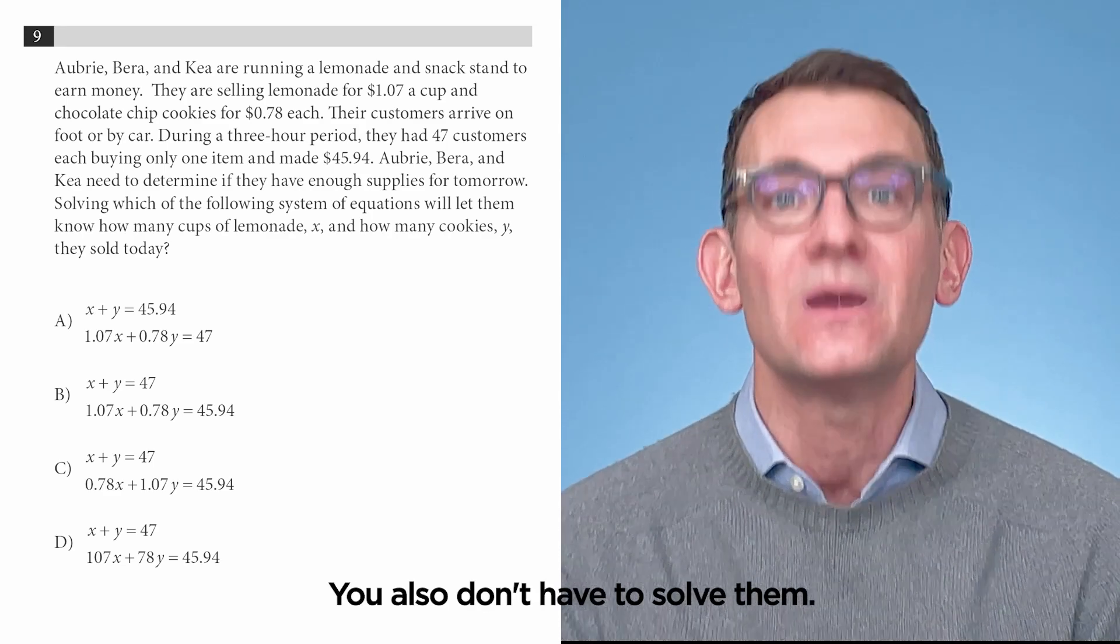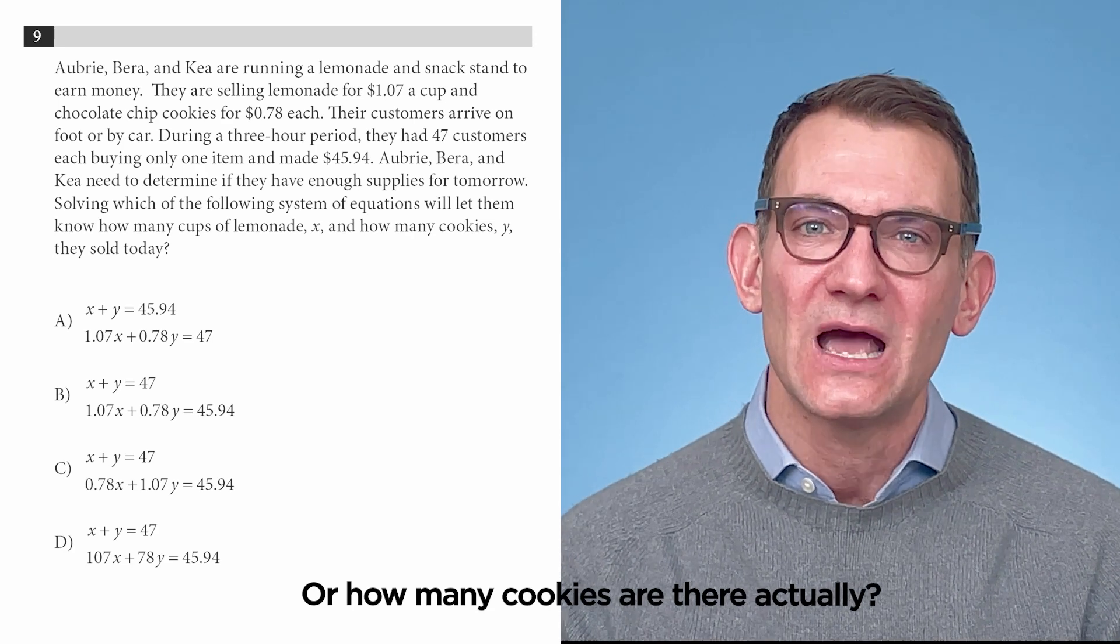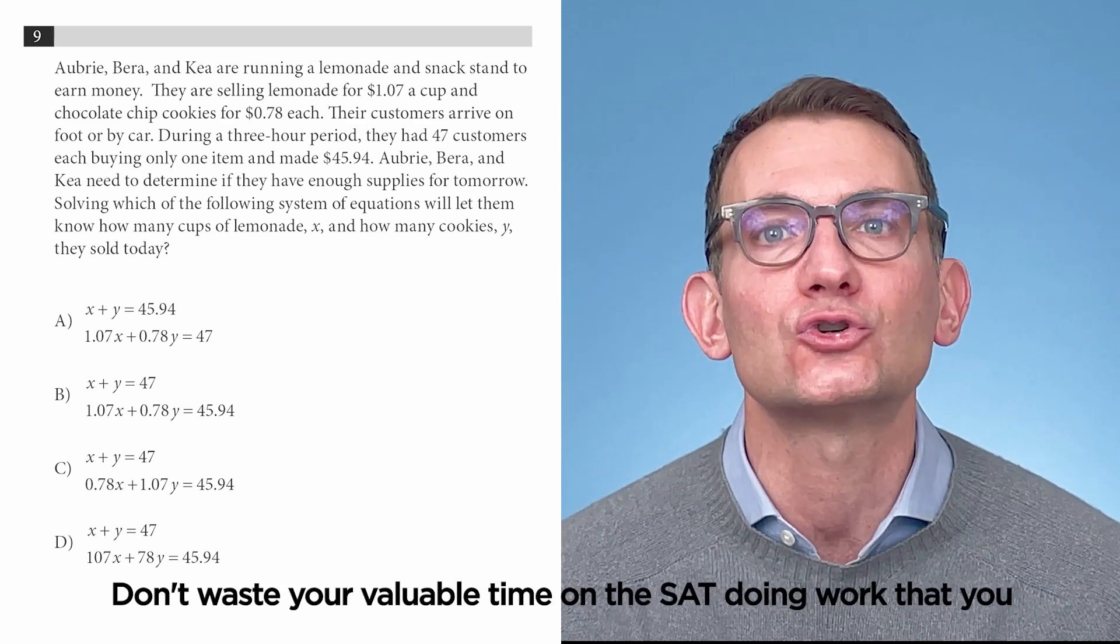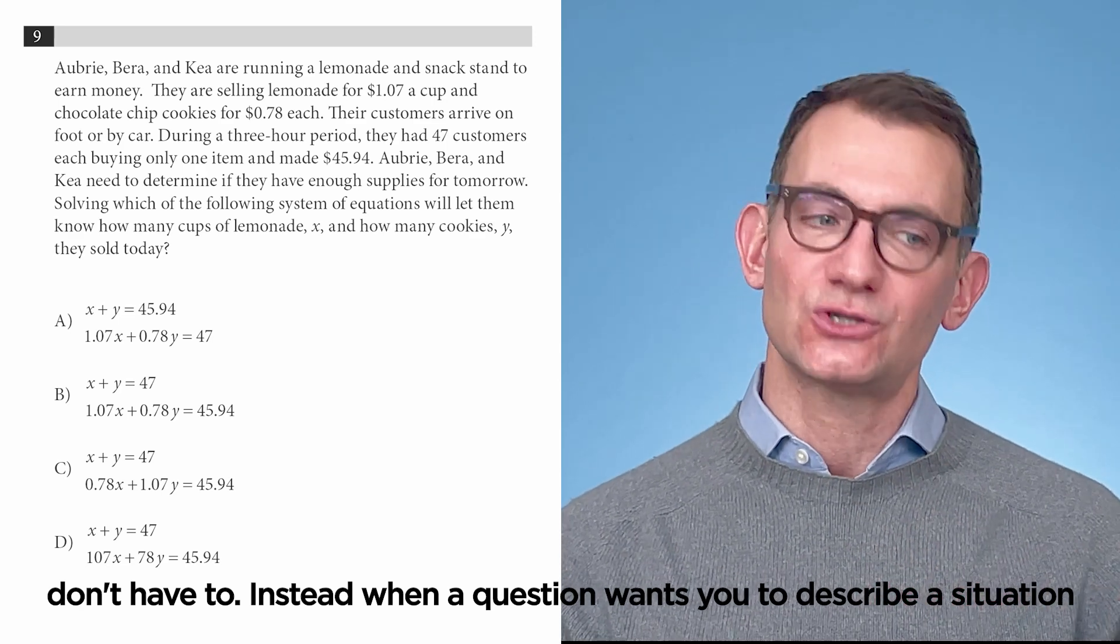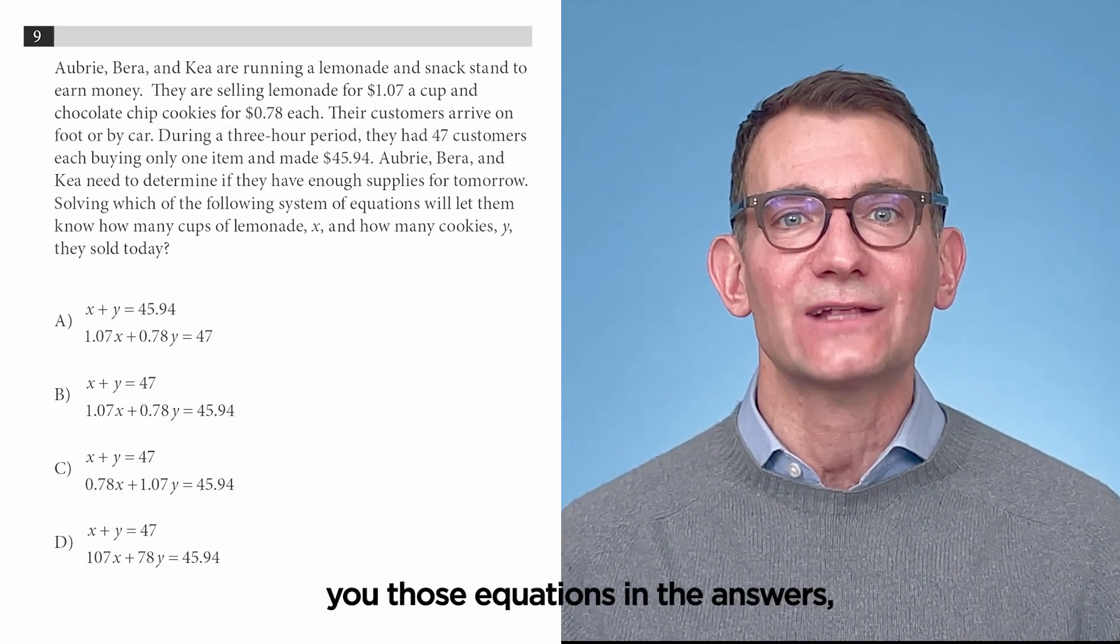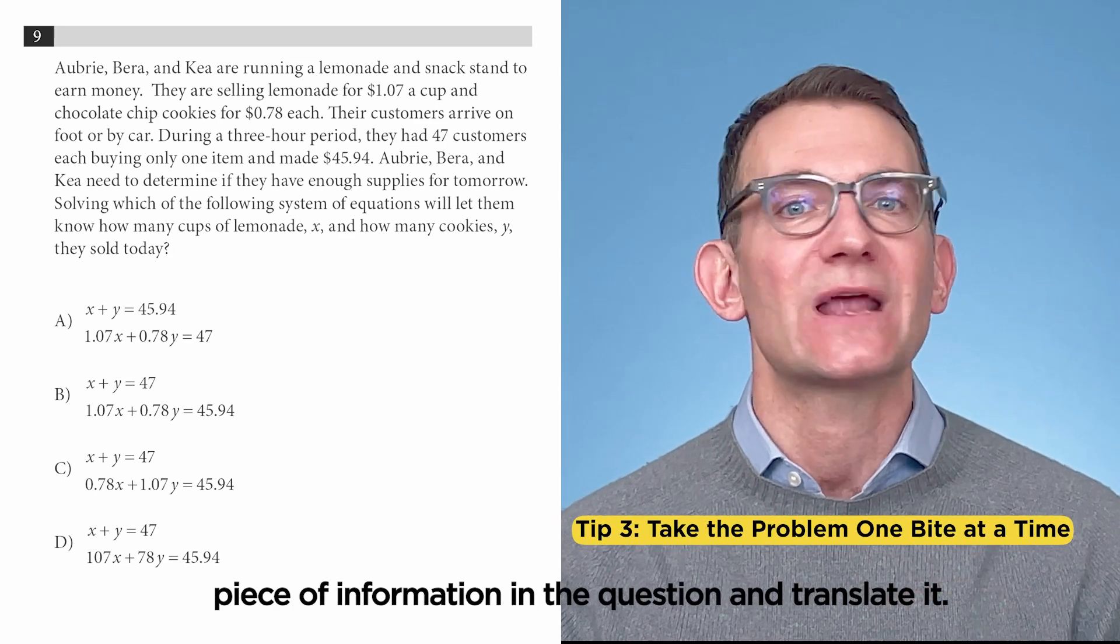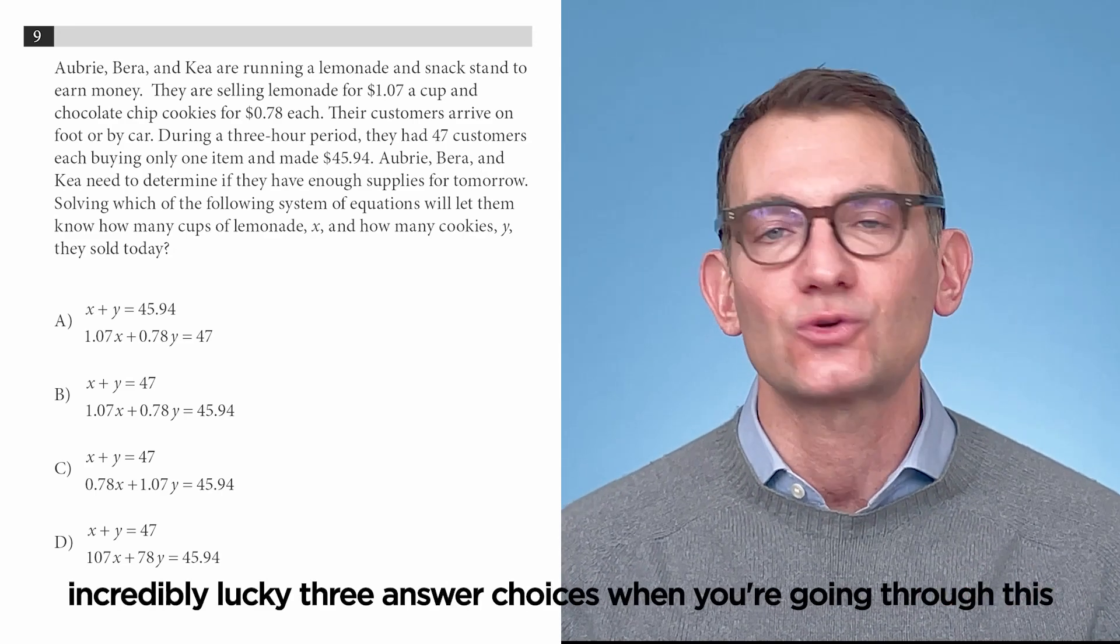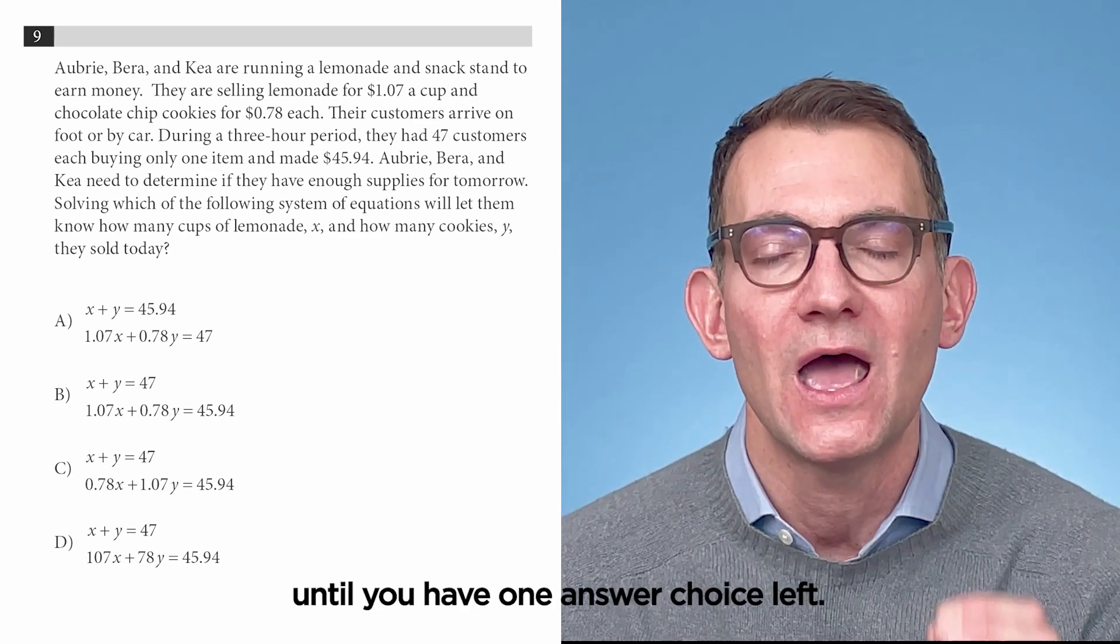You also don't have to solve them because the final question is not asking you what is the value of X, or how many cookies are there actually? That's not what the question is asking. And you've heard me say this before in other videos, but it's always good to say it out loud again. Don't waste your valuable time on the SAT doing work that you don't have to. Instead, when a question wants you to describe a situation or find equations or inequalities that describe a situation and they give you those equations in the answers, then start off by translating—literally finding one bite-sized piece of information in the question. You'll use this very clear strategy to eliminate one, or two, or if you're incredibly lucky, three answer choices when you're going through this process. And you'll keep moving through at one bite-sized piece at a time until you have one answer choice left.